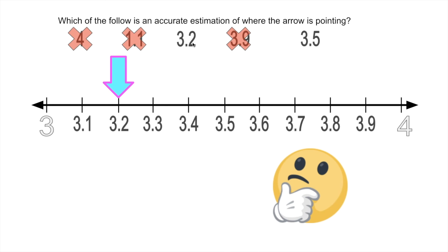Yeah — three and two tenths was the most likely answer. And look, I was right! Three and five tenths is right in the middle because from here to here is five tenths, and from here to here is five tenths — that's ten tenths. So three and five tenths is right in the middle between three and four. In this video, you learned a little bit about placing or finding tenths on the number line. I hope it was helpful.